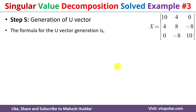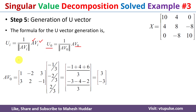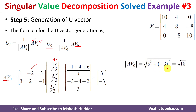The next step is to find the U vector, which is the left singular matrix. The formula is: u_i equals A times phi_i divided by the length of A times phi_i, where A is the given matrix and phi_i is the eigenvector. Using the first eigenvector v0, we compute A times v0, which gives [3, -3]. The length of A times phi_0 equals √18, which equals 3√2.